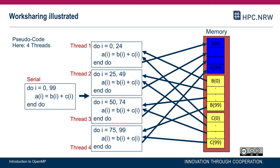If we go parallel with, for example, 4 threads, the iteration space is divided into as many blocks or chunks as we have threads. So the first thread will iterate from i equals 0 to 24, the second from 25 to 49, and so on. The OpenMP runtime is responsible for dividing the loop iteration space so that all threads in the parallel team are exploited. In this particular example, each thread only reads a certain partition of B and C and writes to a disjoint partition of A, so there are no conflicts.